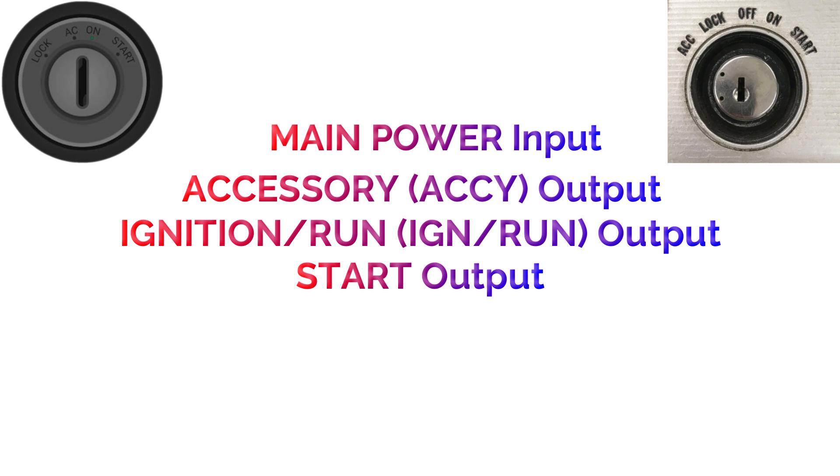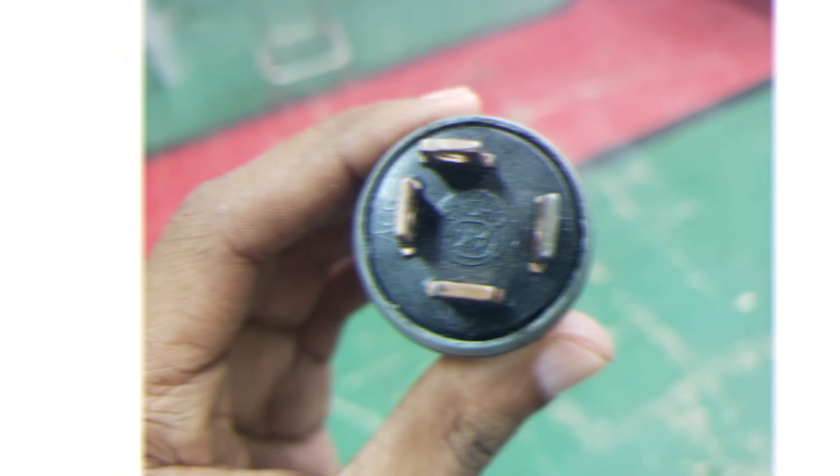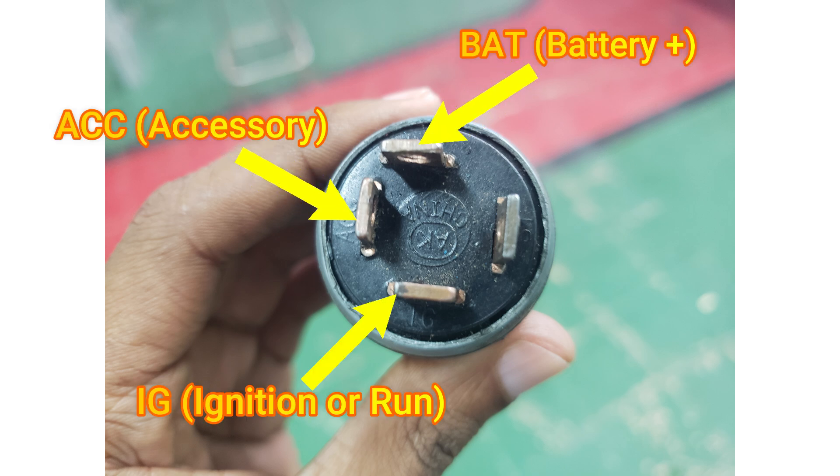Ignition Switch Positions function as both inputs and outputs within a vehicle's electrical system. The main power is an input. The accessory is an output. The ignition, or run, is an output. The start is an output.